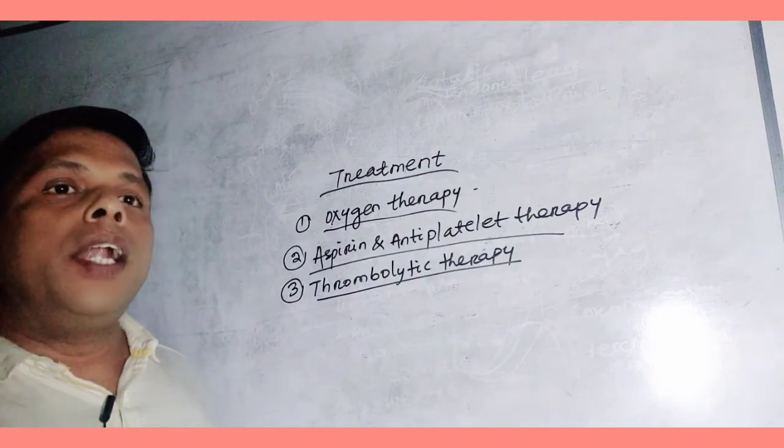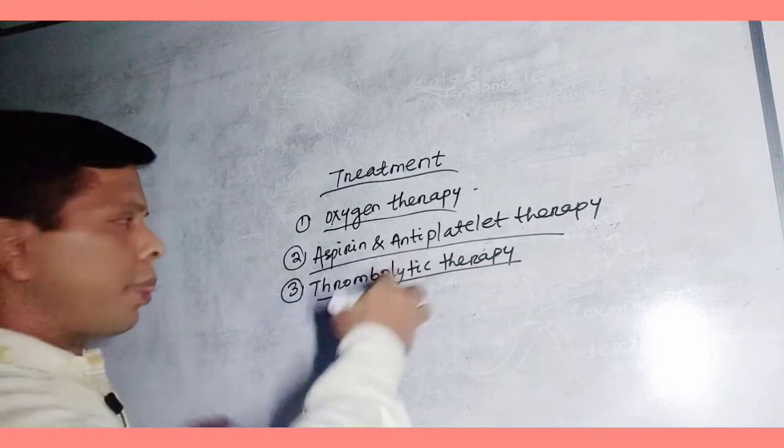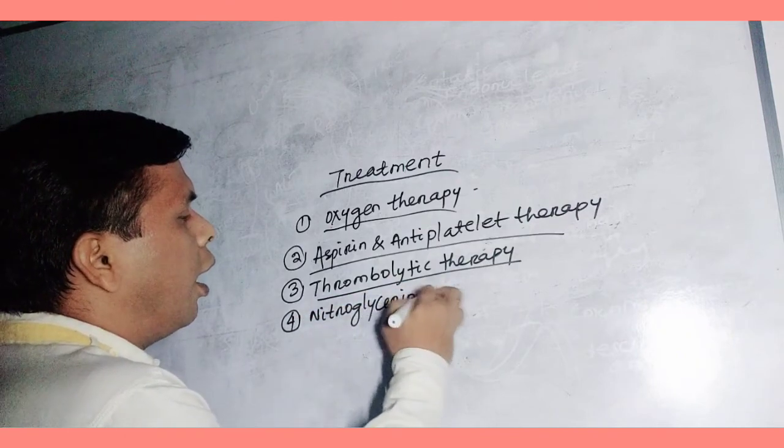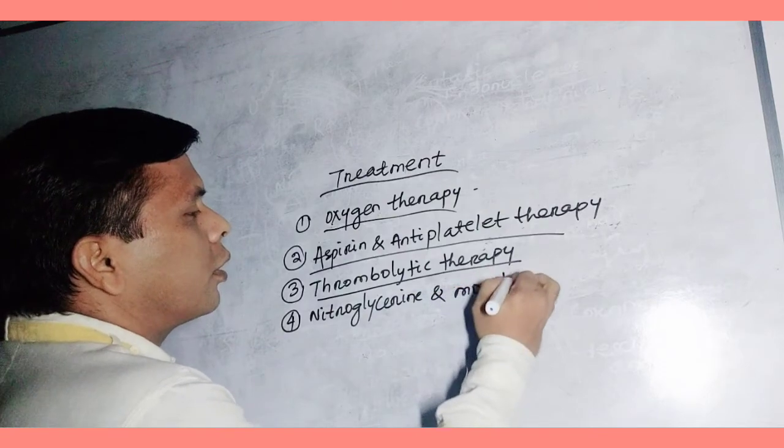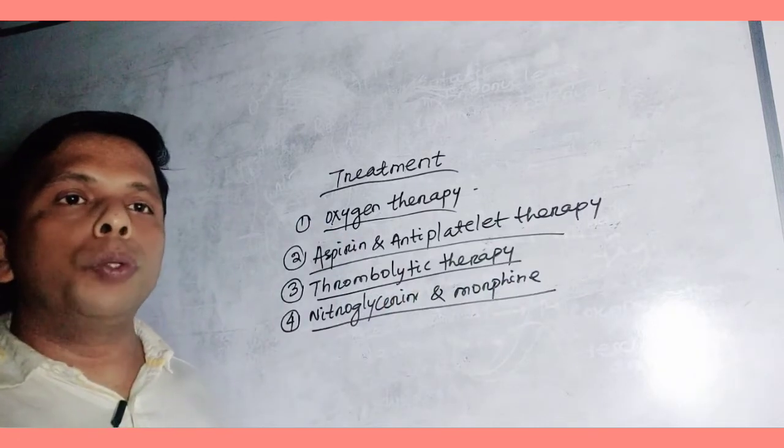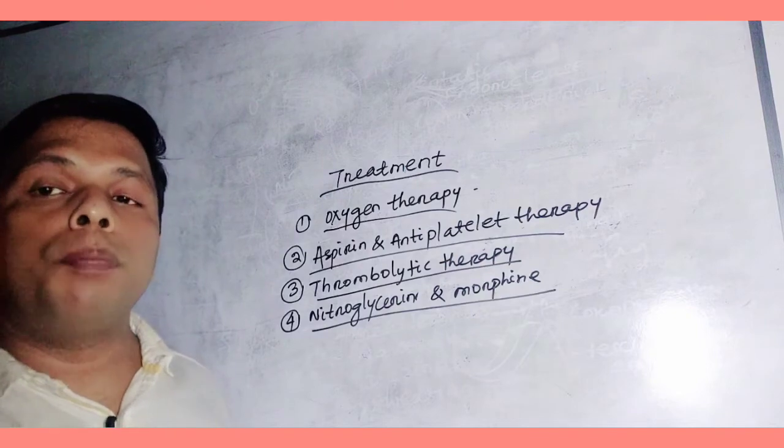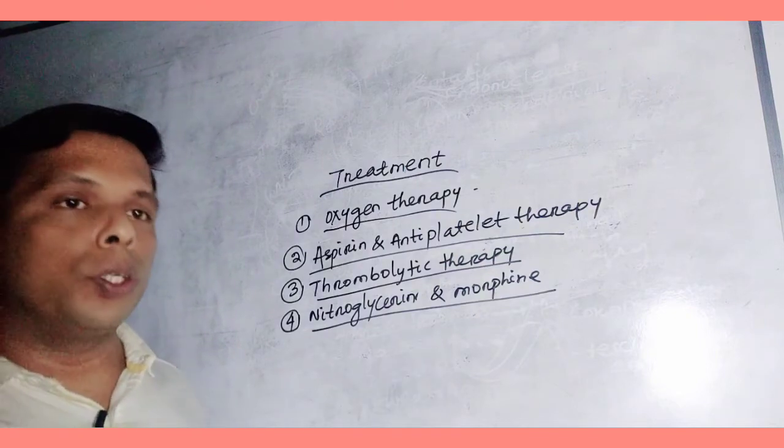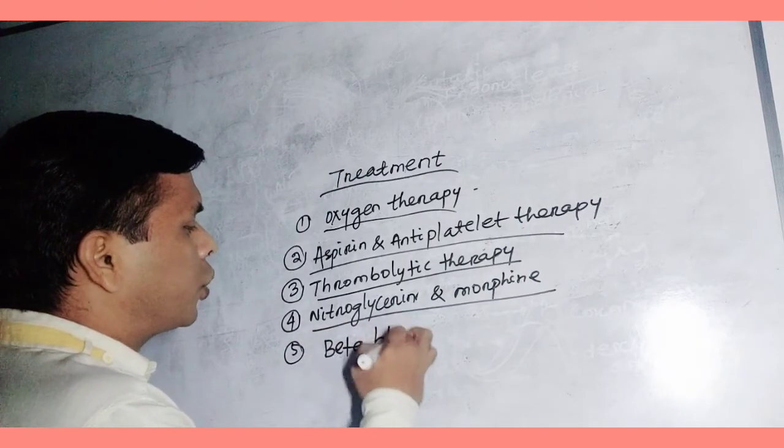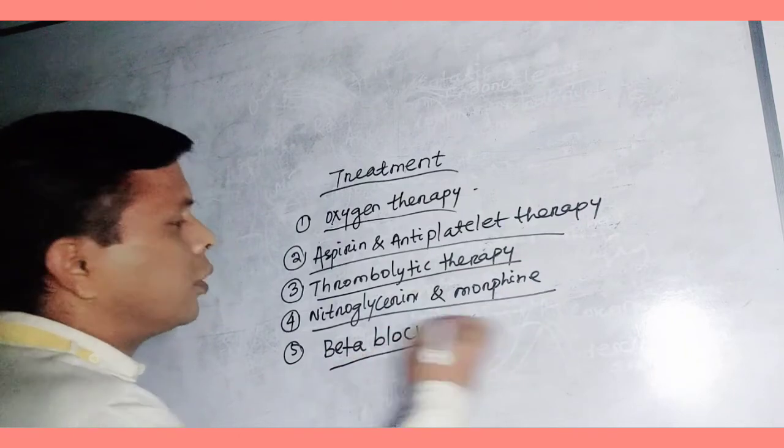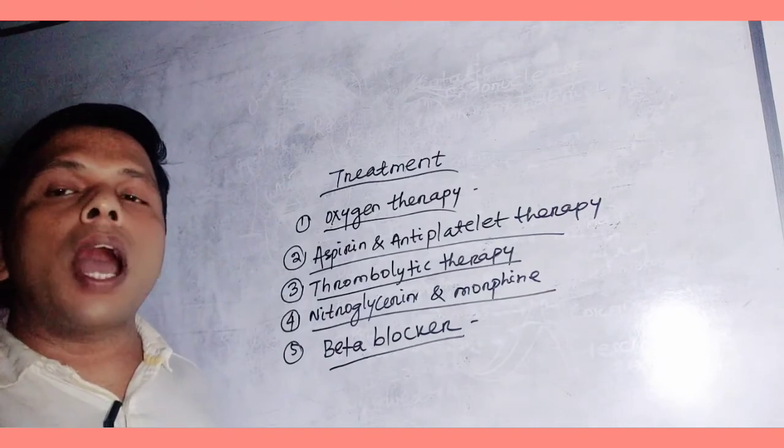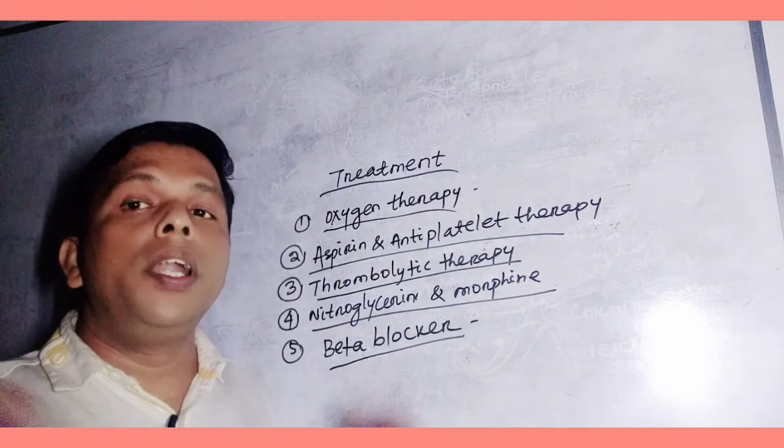Then nitroglycerin and morphine. These are used to relax artery and to relax from the pain. Then the fifth remedy are beta blockers. Beta blockers are used to reduce heart rate.